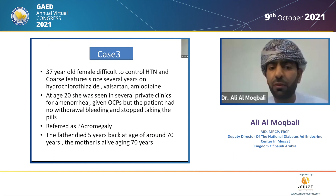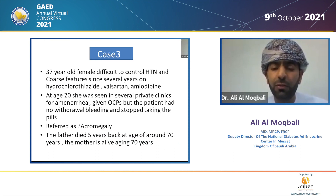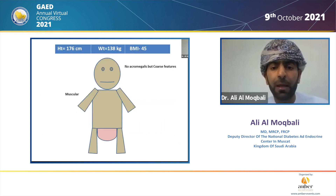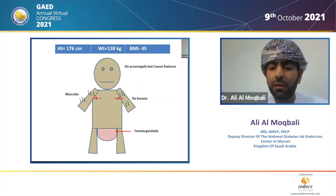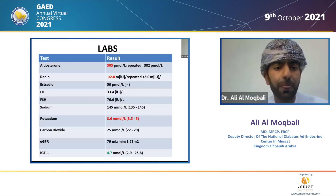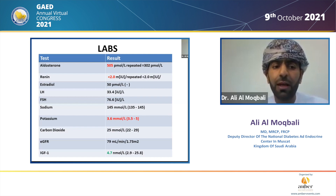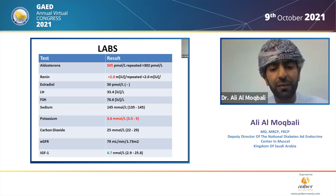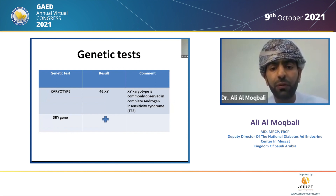Our third patient is a 37-year-old female with difficult-to-control hypertension and Cushingoid features, on multiple medications for blood pressure, with primary amenorrhea. She got OCPs but there was no withdrawal bleeding. She was referred for Cushingoid features, queried acromegaly. On examination, she has Cushingoid features but no acromegalic features, she is tall, muscular, has no breasts, and has complete external female genitalia. Her biochemistry showed a picture of primary hyperaldosteronism: aldosterone is elevated and a picture mimicking premature ovarian failure — estradiol is low, LH and FSH are high, potassium is 3.6, and normal IGF-1 which argues against acromegaly. The karyotype was 46XY and the SRY gene is present.